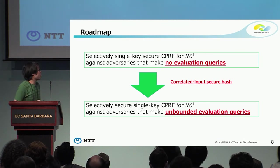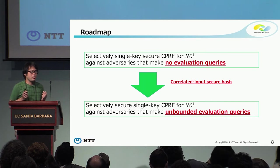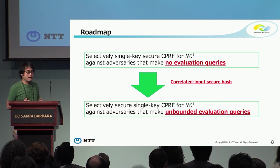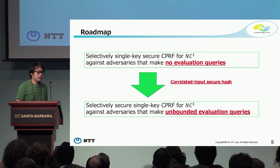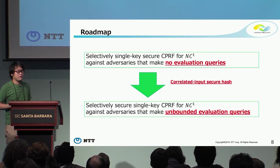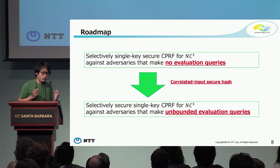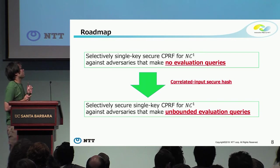Here is the roadmap of our construction, which is divided into two steps. First, we construct a selectively single-key secure CPRF for any NC1, that is only secure against adversaries making no evaluation queries. Then we strengthen this construction using a correlated input secure hash function to achieve security against adversaries making an unbounded number of evaluation queries.